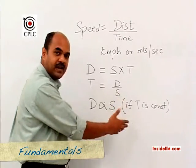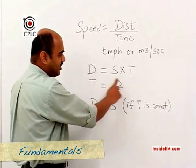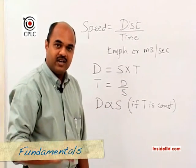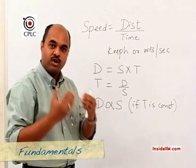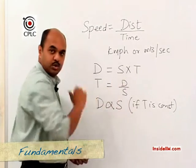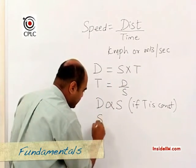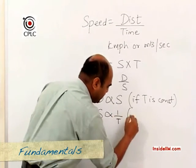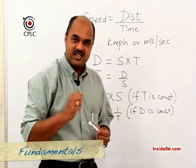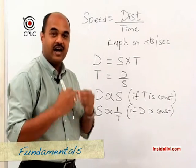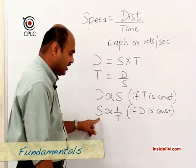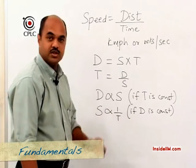On the other hand, if speed is kept constant, then distance varies directly as time — meaning traveling at the same speed for more time means covering more distance. However, relating the two gives us: speed varies inversely as time if distance is constant. To cover the same distance, traveling at a higher speed means taking lesser time.